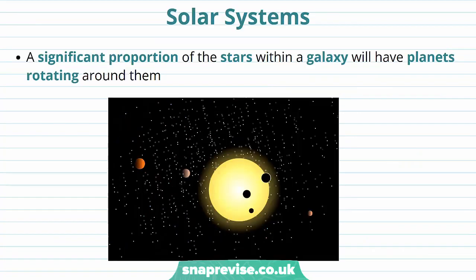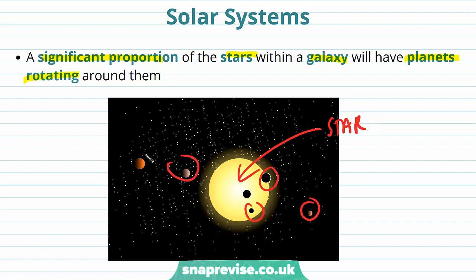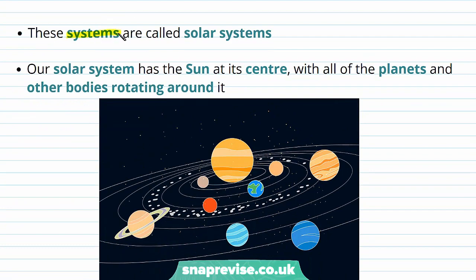Now let's define what a solar system is. A significant proportion of the stars within a galaxy will have planets rotating around them. These systems of stars surrounded by planets are called solar systems. Our very own solar system has the Sun at its centre, with all of the planets and other bodies rotating around it.